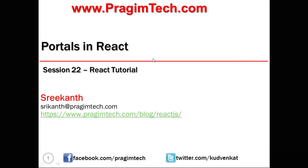Welcome to session number 22 in the React learning series. In this session, we will discuss portals in React. Portals provide a way to render children into a DOM node that exists outside the DOM hierarchy of the parent component. Normally, when we return an element from a component's render method, it is mounted into the DOM as a child of the nearest parent node. However, sometimes it's useful to insert a child into a different location in the DOM. Let's understand this with an example.